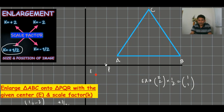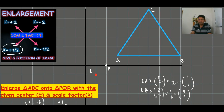E to B: the column vector from E to B is (8, 2). Multiplying (8, 2) by one-half gives (4, 1) — dividing by two. From the center, four across and one up gives the position of Q.